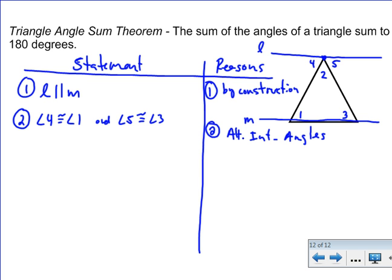1 and 4 and 3 and 5, you've got parallel lines. The sides of that triangle are the transversals. So 1 and 4 are alternate interior angles, which we know a theorem about that, that they're congruent. 5 and 3 are the same thing.